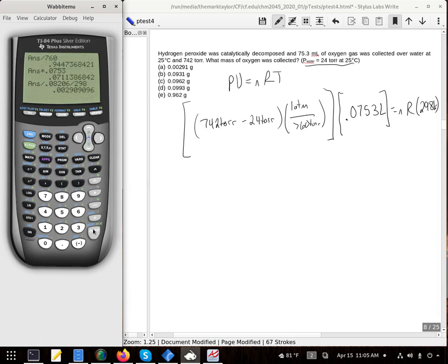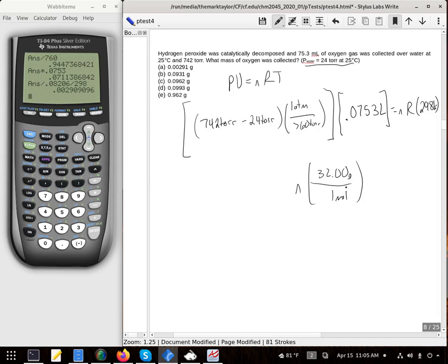And this value is our moles. And it is up there as A, but I want a mass of oxygen. So I'm going to take that n that I just got, and I'm going to essentially multiply it by the molecular weight of oxygen. And that will give me our answer.